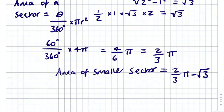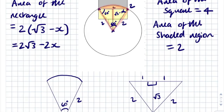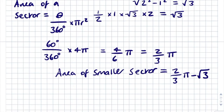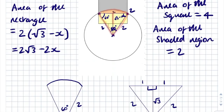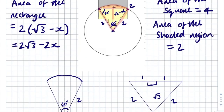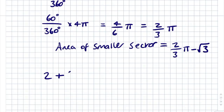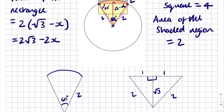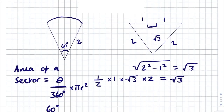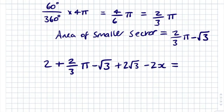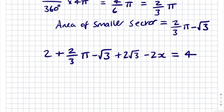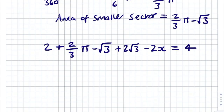Now I have everything needed. Area of shaded region + area of smaller sector + area of rectangle = total area of square. So: 2 + (2π/3 - √3) + (2√3 - 2x) = 4. The -√3 and +2√3 simplify to +√3, giving: 2 + 2π/3 + √3 - 2x = 4.